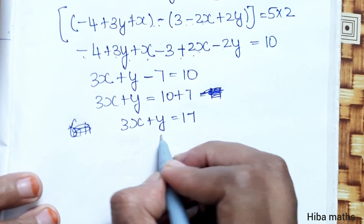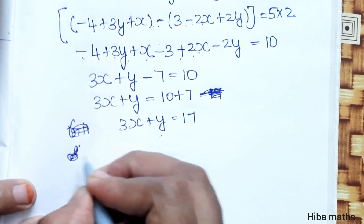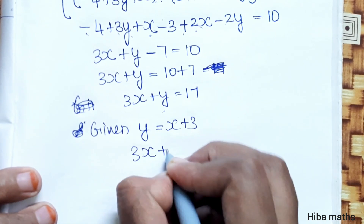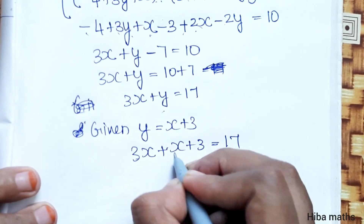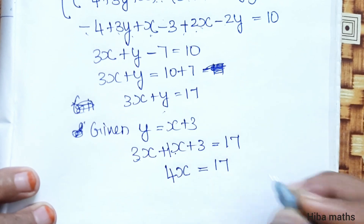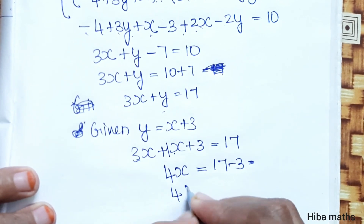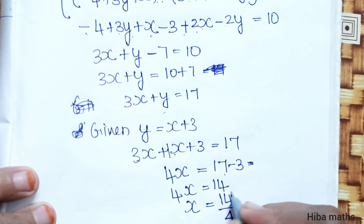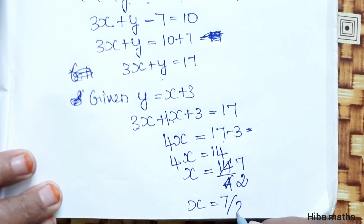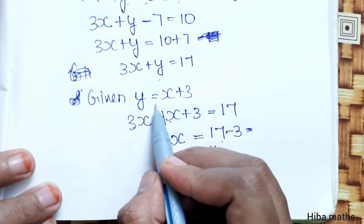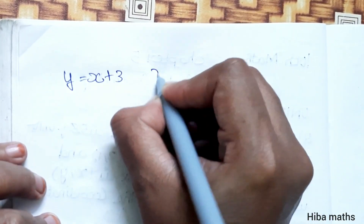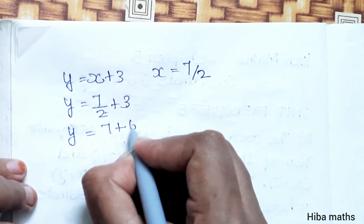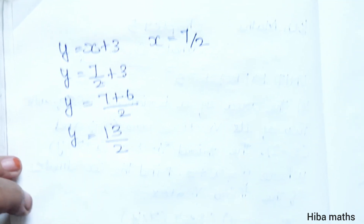Next, substituting y equals x plus 3 into 3x plus y equals 17: we get 3x plus (x plus 3) equals 17, so 4x plus 3 equals 17, giving 4x equals 17 minus 3 equals 14, so x equals 14 by 4, which simplifies to x equals 7 by 2. Now substituting back: y equals x plus 3 equals 7 by 2 plus 3 equals 7 plus 6 by 2 equals 13 by 2.